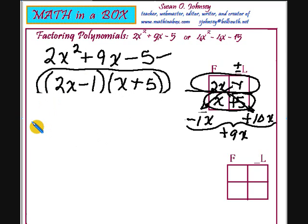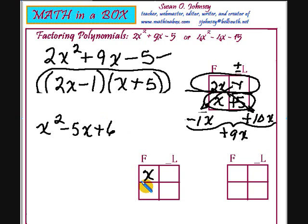Alright, let's try another one. x² - 5x + 6. We just need to write x times an x. Now, look at the last term. It's a positive 6.